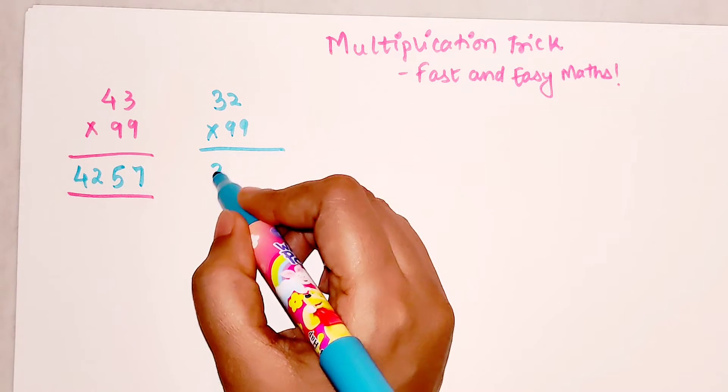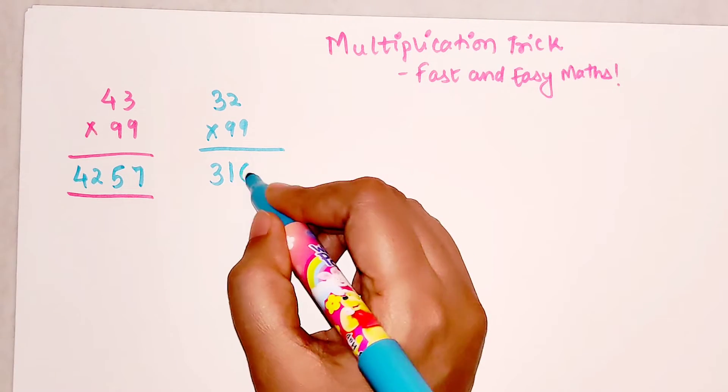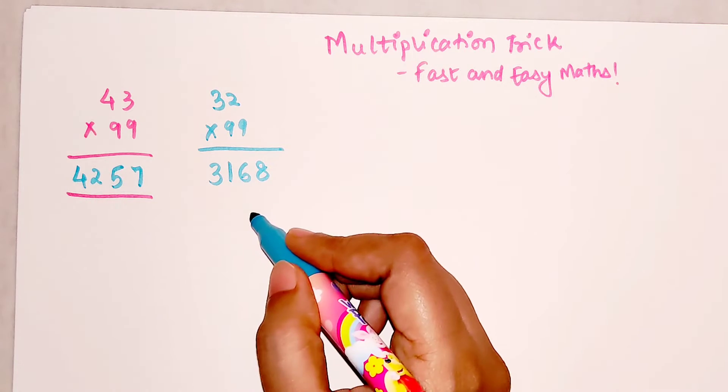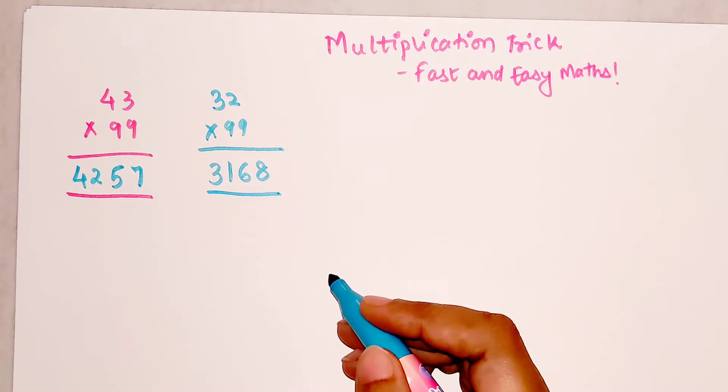Let's do 32 into 99. If that is the case, then we get 3168. That's your answer for this one.